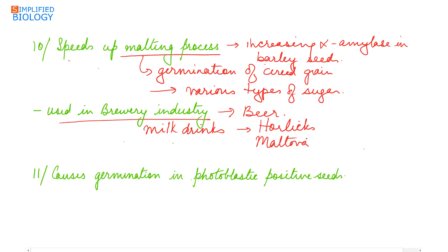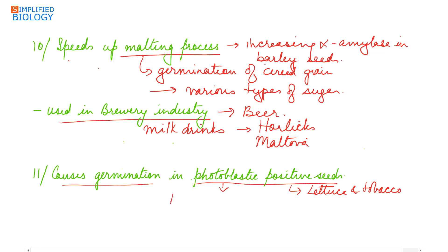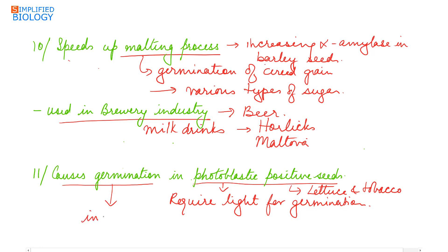Gibberellins cause germination in photoblastic positive seeds. Photoblastic positive seeds, such as lettuce and tobacco, require light for germination. These seeds can be made to germinate in the dark with the help of gibberellin.